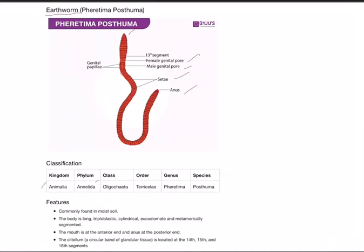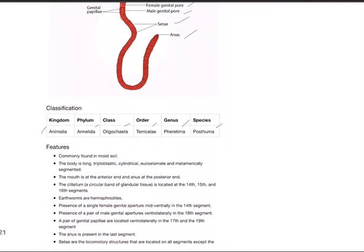Classification: Kingdom Animalia, Phylum Annelida, Class Oligochaeta, Order Terricola, Genus Pheretima, Species posthuma. Remember all these words are Latin words. You may find it difficult to pronounce and write the spelling, so you need to practice. Now come to the features: generally found in moist soils, the body is long, triploblastic.